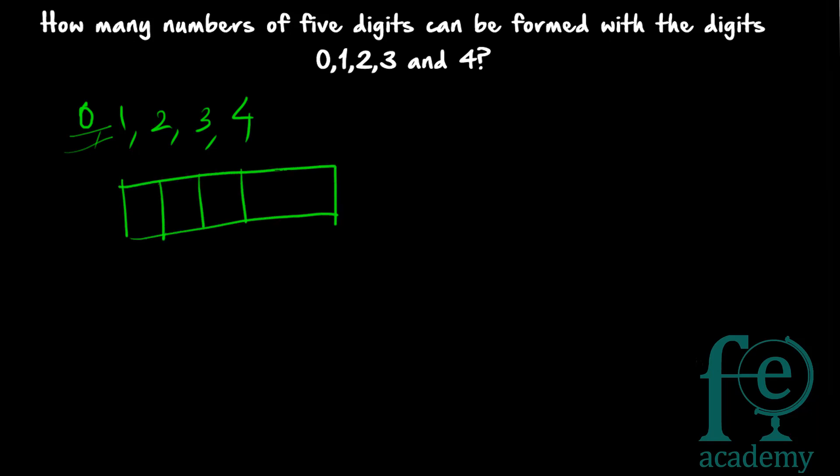This 0 cannot come in the 10,000th place. If 0 comes in the 10,000th place, it becomes a 4-digit number. For example, 01234 will be read as only 1234. So 0 has no value in the 10,000th place and cannot come there.